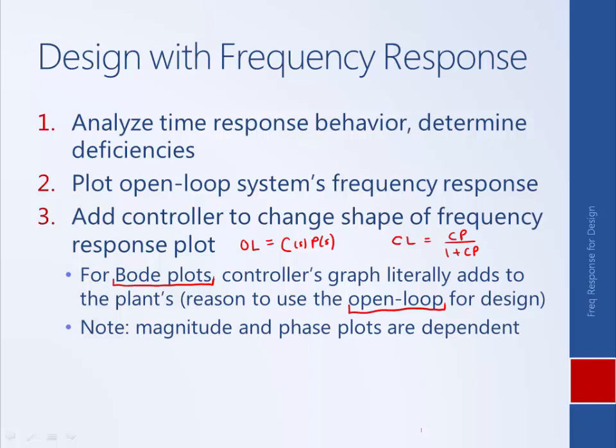One thing to be careful about is that a system's frequency response — its Bode plot — has magnitude and phase that depend on one another. So if you're trying to achieve a certain steady state error by changing the DC gain, or a certain speed of response by changing the gain crossover frequency, you may adversely affect the system's phase margin and therefore its overshoot. Because of that, often this process is iterative — you have these competing goals that are always fighting against one another.